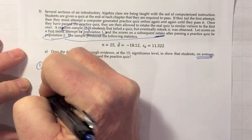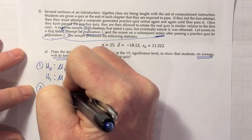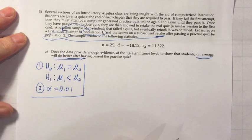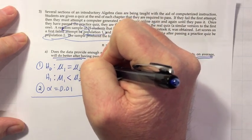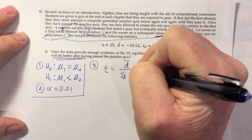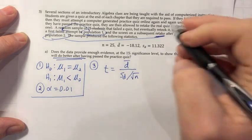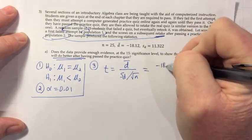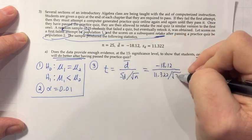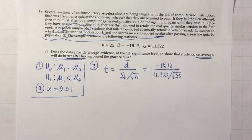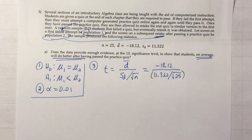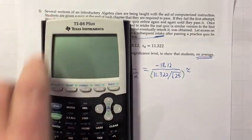Step two: alpha = 0.01. Step three: compute the test statistic. The formula is t = d-bar divided by (s_d divided by square root of n). Plugging in: t = −18.12 divided by (11.322 divided by √25). Remember, if you have more than one number in the denominator, you need parentheses in the calculator. The result is approximately −8.002 — a very large test statistic. If H0 were true, you'd expect to be within a couple of standard deviations of the mean, but we're over eight standard deviations to the left.